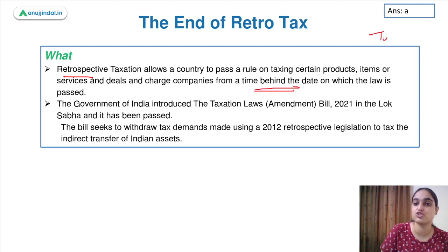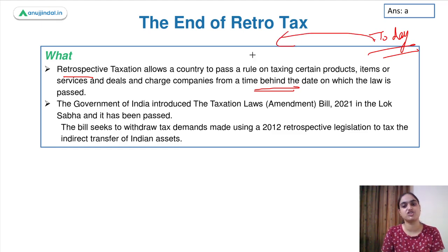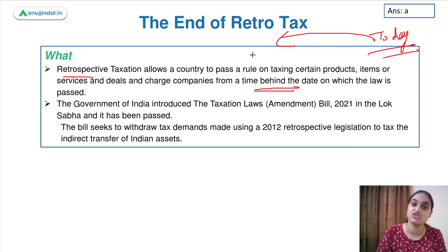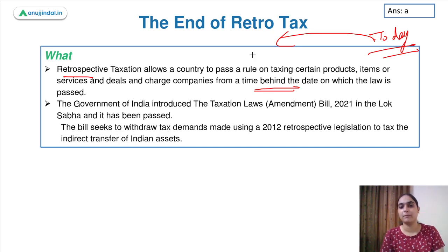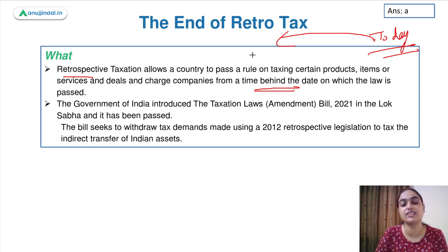Retrospective taxation means a country allows passing a rule to tax some products, items, services, or deals from a time before the date on which the law is passed. So if this law is passed today, it is going to tax deals in that regard which happened in the past as well — you implement it from a retrospective date, meaning transactions before that rule will also be taxed.